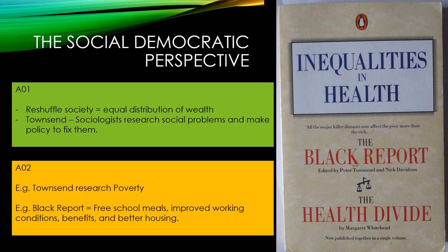The second viewpoint is the social democratic perspective, which wants a major reshuffle of society to redistribute wealth from rich to poor — a bit like Robin Hood. Townsend argues sociologists should research social problems and make policies to fix them. His research into poverty influenced many welfare policies, including the Black Report, which made 37 recommendations such as free school meals, improved working conditions, better benefits for the disabled, and improved housing.